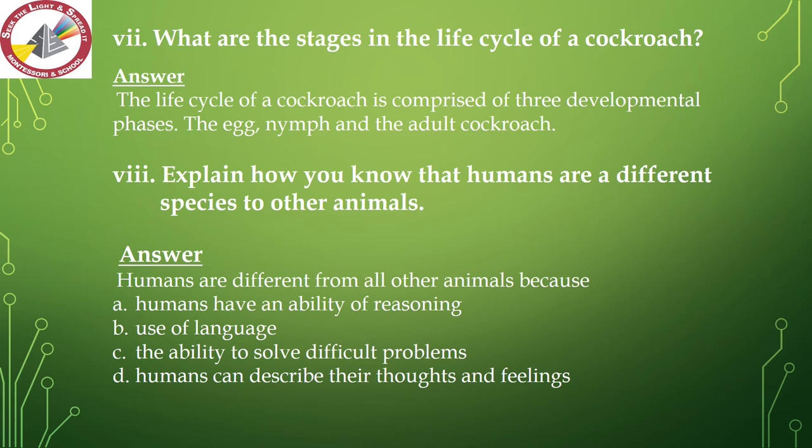Question number 7 — what are the stages in the life cycle of a cockroach? The life cycle of a cockroach is comprised of 3 developmental phases: the egg, nymph, and the adult cockroach. Question number 8 — explain how you know that humans are a different species to other animals. Humans are different from all other animals because humans have the ability of reasoning, use of language, the ability to solve difficult problems, and can describe their thoughts and feelings.